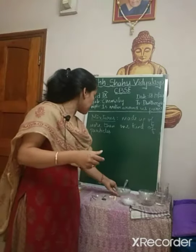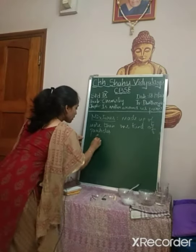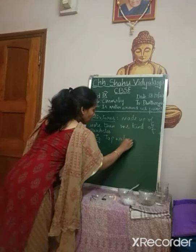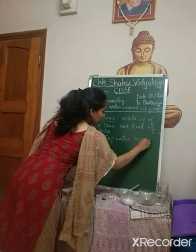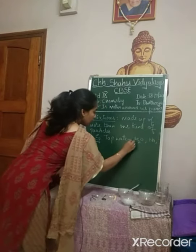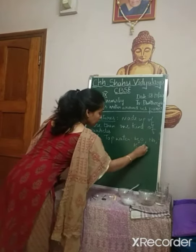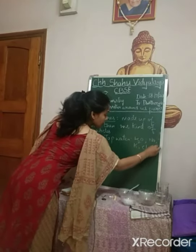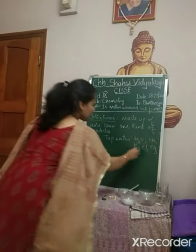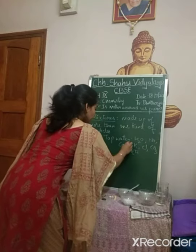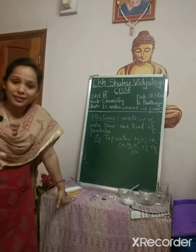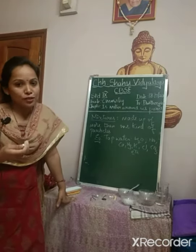An example to distinguish between a pure substance and a mixture is your tap water. Tap water contains H2O molecules plus sodium minerals. It may contain sodium, potassium, chlorine, carbonates, calcium, magnesium, and so on. It is a mixture of many minerals. Based on the source of water it may contain many things — sometimes sand particles and oil particles also.